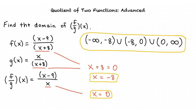So let me see if I have this all straight. First, we start off by writing the equation f of x divided by g of x. Next, we substitute the corresponding functions for f of x and g of x. Then we simplify by canceling where we can and combining like terms. Next, to find the domain of our function, we set the denominators of f of x, g of x, and f over g equal to 0. Any values that make the denominator equal to 0 are excluded from our domain. Then we write the answer in interval notation.